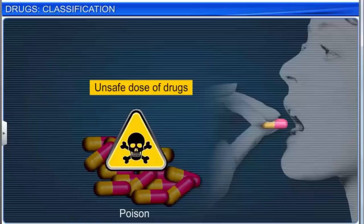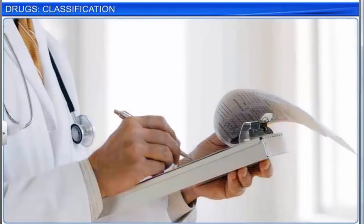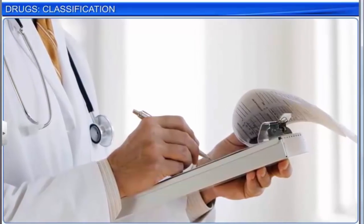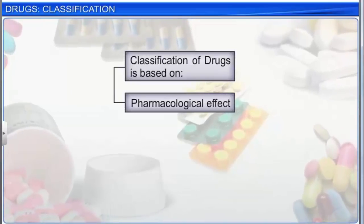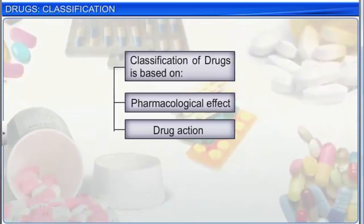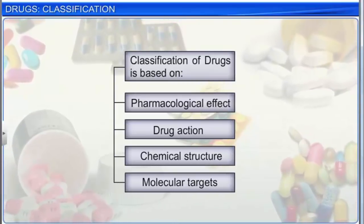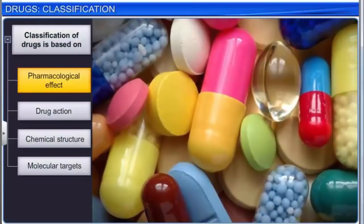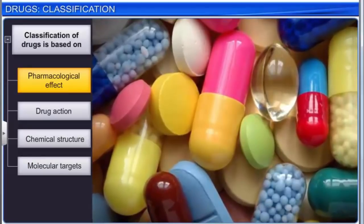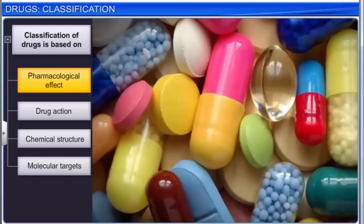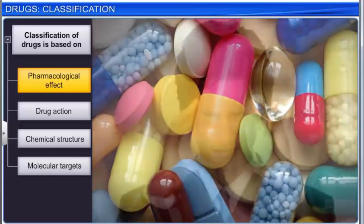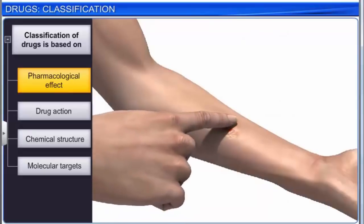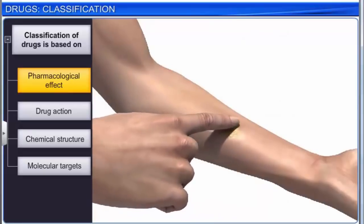Never take drugs on your own — always consult a qualified medical practitioner. Drugs can be classified on the basis of their pharmacological effect, drug action, chemical structure, and molecular targets. Drugs classified on the basis of their biological or pharmacological effects are useful in treating a particular type of problem. For example, analgesics have a pain-killing effect, whereas antiseptics kill or arrest the growth of harmful microorganisms.